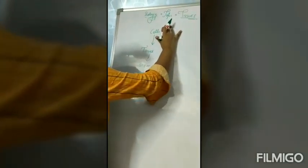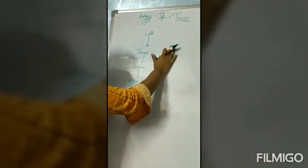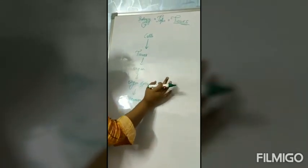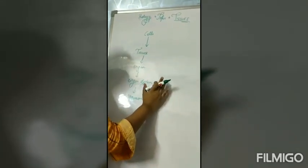When similar types of cells combine, they form tissues. When tissues combine, they form organs. When organs combine, they form organ systems. And when organ systems combine, they form organisms.